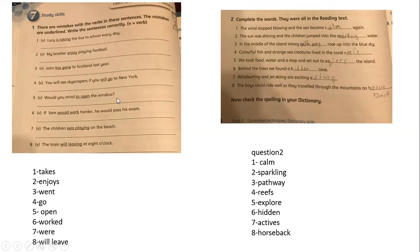Here, would you mind to open the window? Would you mind open without to. Here, if Sam would work harder he would pass his exam. If Sam worked. The children were playing. The children is plural. Now here, the train will leaving at nine o'clock. After will, always verb one: will leave.